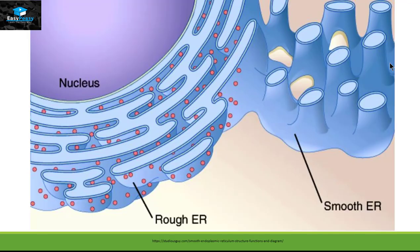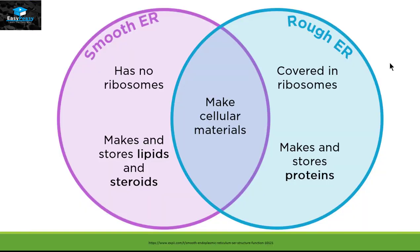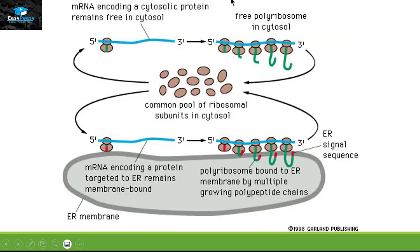We have two different types of endoplasmic reticulum: one is called rough endoplasmic reticulum and one is called smooth endoplasmic reticulum. Smooth ER doesn't have ribosomes attached to it and makes and stores lipids and steroids. Rough ER, on the other hand, is covered with ribosomes and its major function is to make and store proteins. In this picture you can see the small and large subunits of the ribosome present inside the cytosol.